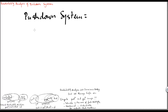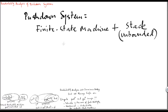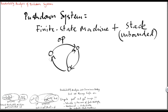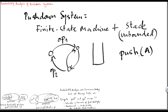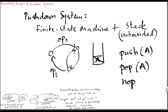A pushdown system is a finite state machine supplied with an unbounded stack. We have a machine with a finite number of control states and each transition may perform an operation on the stack. The operations we can do are either push A, which adds a symbol A on top of the stack; pop A, which erases a symbol from the top of the stack; or nop, which means the transition has no effect on the stack.